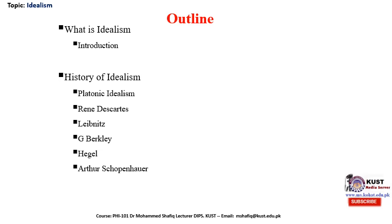After Descartes, we are going to touch on Leibniz's idealism — he is considered one of the major German idealists. We will then move on to British idealism and look into George Berkeley's version of idealism. After that, we are going to discuss what is Hegel's version of idealism — a very well-known German philosopher — and finally we will look at Arthur Schopenhauer's take on idealism in metaphysics.